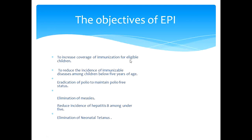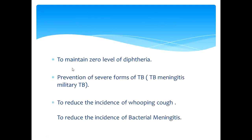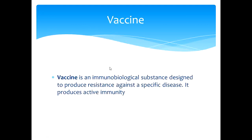The initial objectives of EPI were to increase coverage of immunization for eligible children, to reduce the incidence of immunizable diseases among children below five years of age, eradication of polio, maintaining polio-free status, elimination of measles, reducing incidence of hepatitis B among under-fives, elimination of neonatal tetanus, maintaining zero level of diphtheria, prevention of severe forms of TB meningitis, and reducing the incidence of whooping cough and bacterial meningitis.